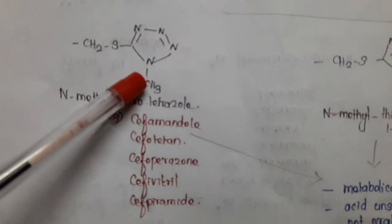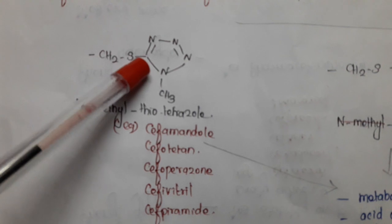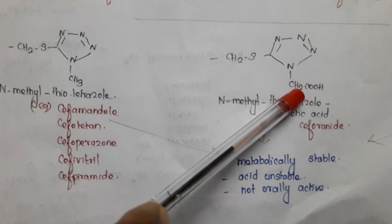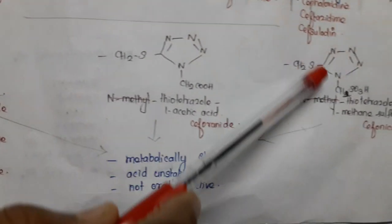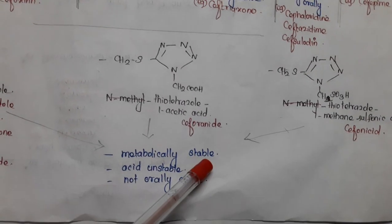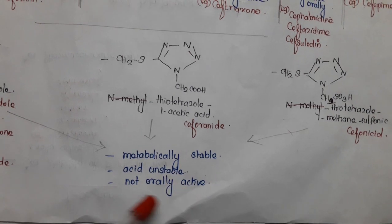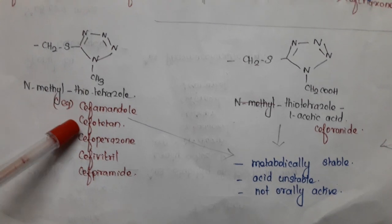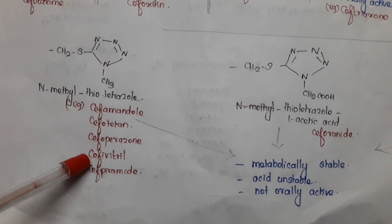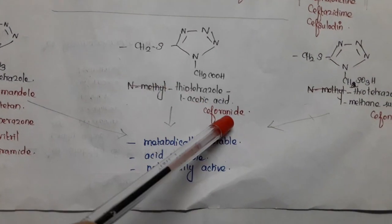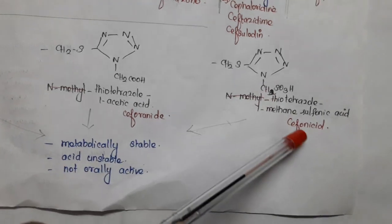If N-methylthiotetrazole, thiotetrazole-1-acetic acid, or thiotetrazole-1-methanesulfonic acid are introduced in the third portion, the final compound is metabolically stable, acid unstable, and not active orally. Examples for N-methylthiotetrazole include cefamandole, cefotetan, cefoperazone, cefpiramide, and related compounds. An example for thiotetrazole-1-acetic acid is cefuroxide, and for thiotetrazole-1-methanesulfonic acid is cefmenoxid.